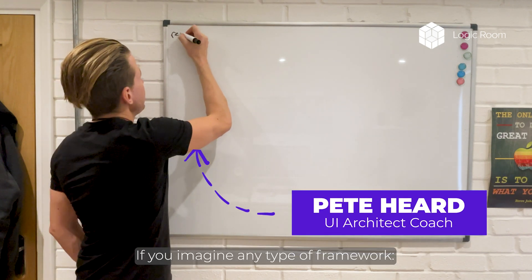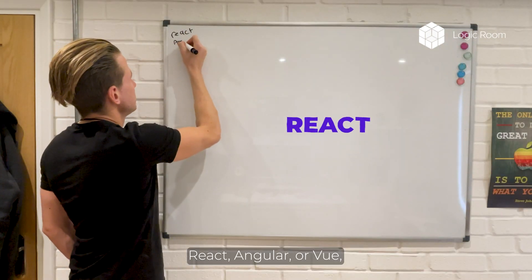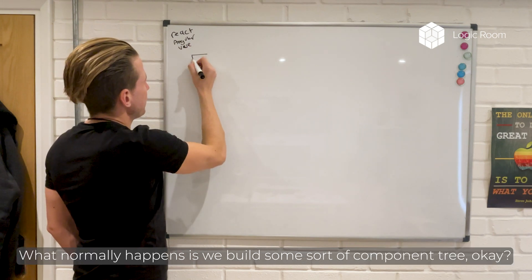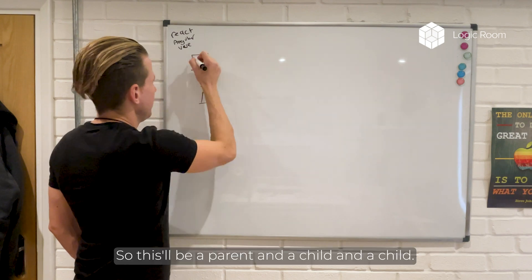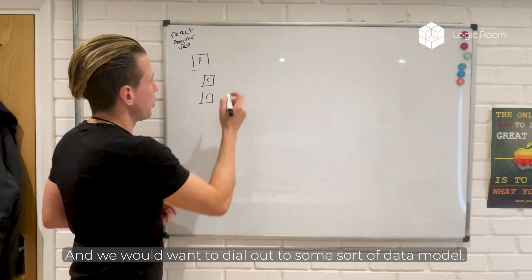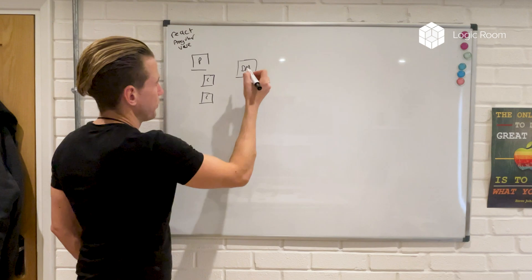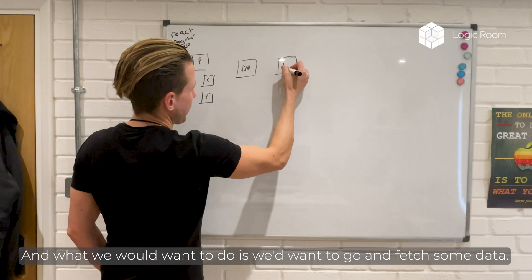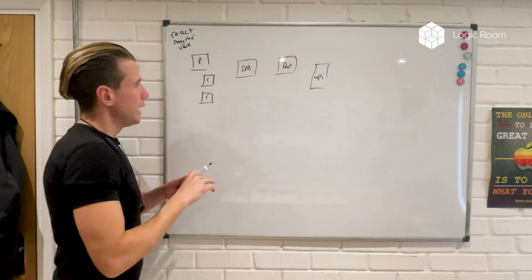If you imagine any type of framework — React, Angular or Vue — what normally happens is we build some sort of component tree. It's supposed to be a parent and a child and a child. And we would want to dive out to some sort of data model, go and fetch some data, probably go to an API.